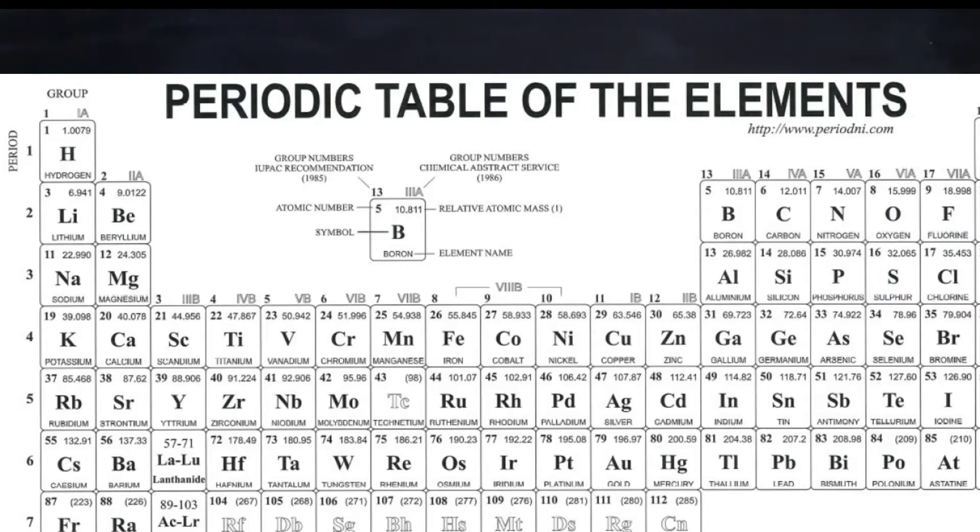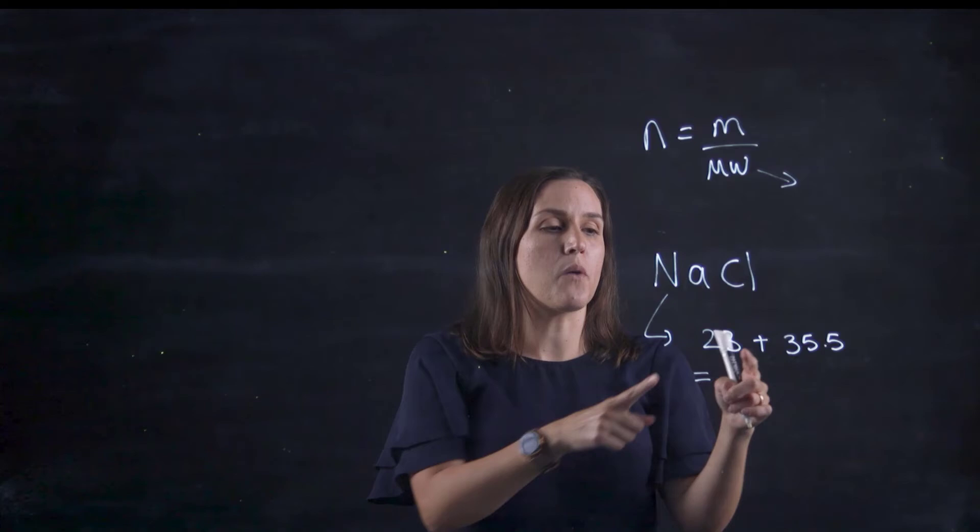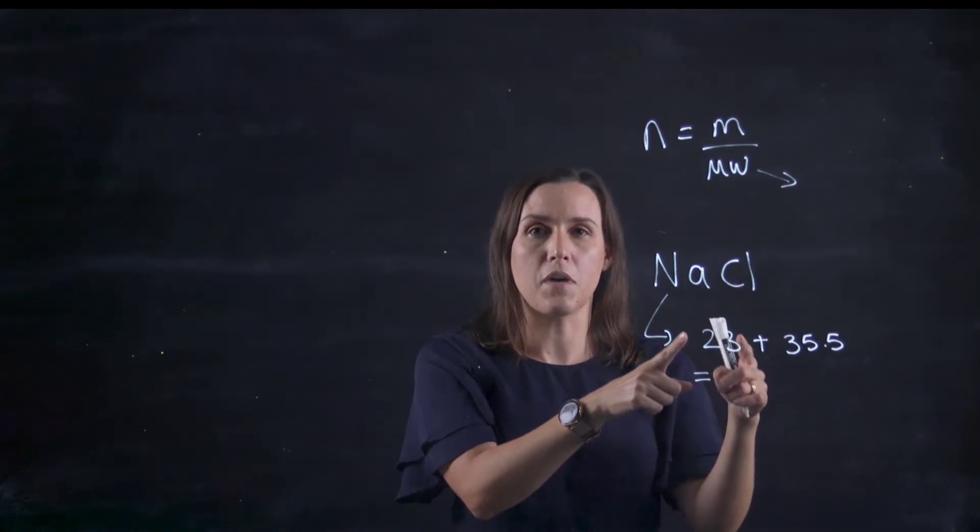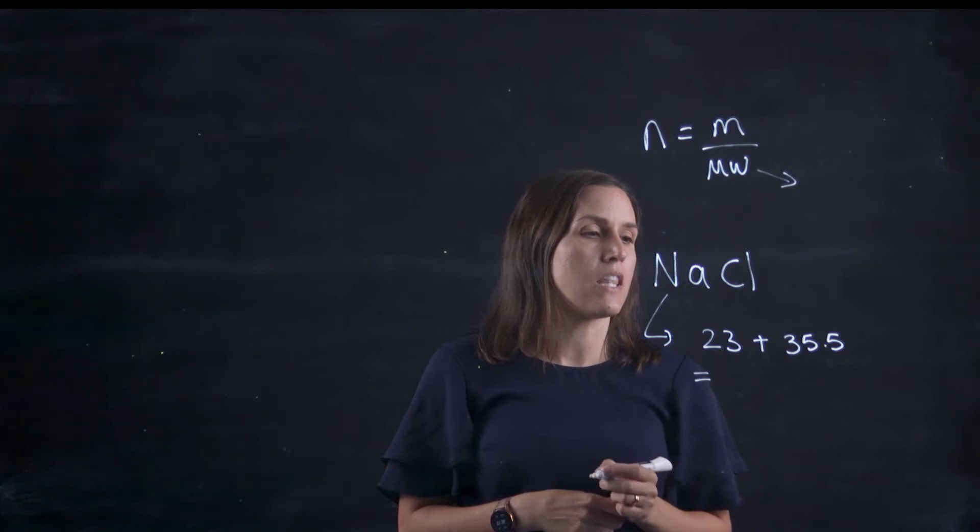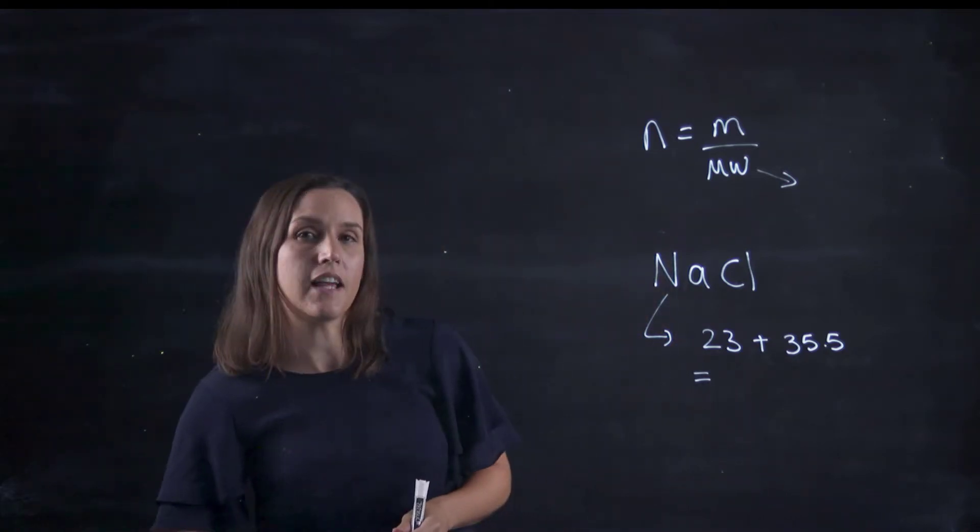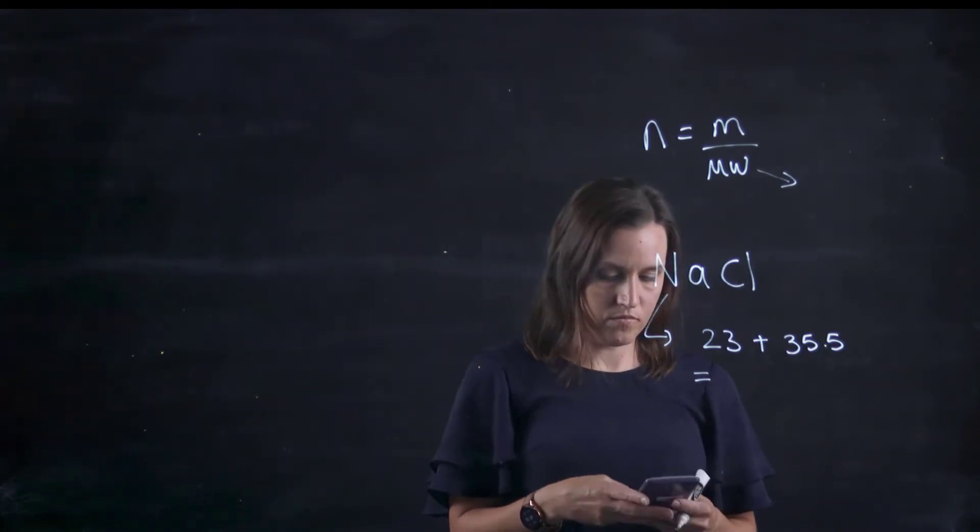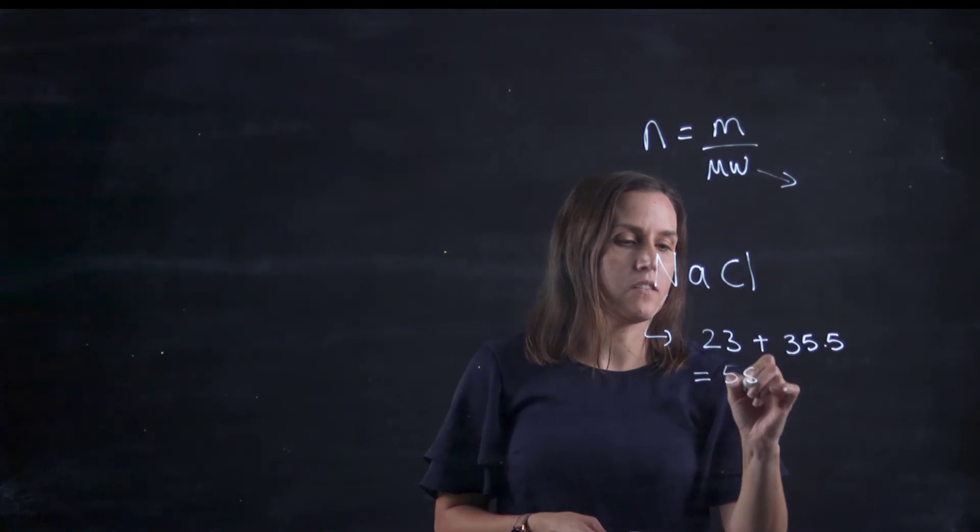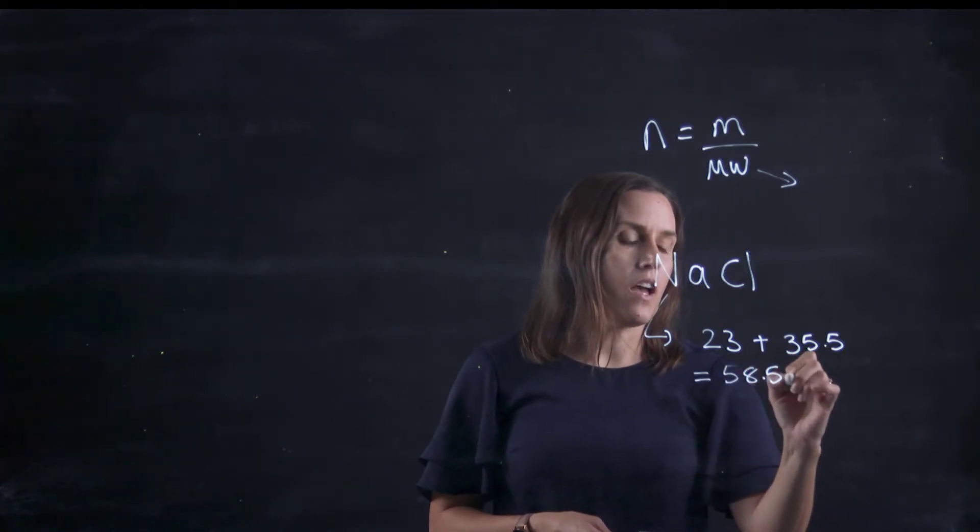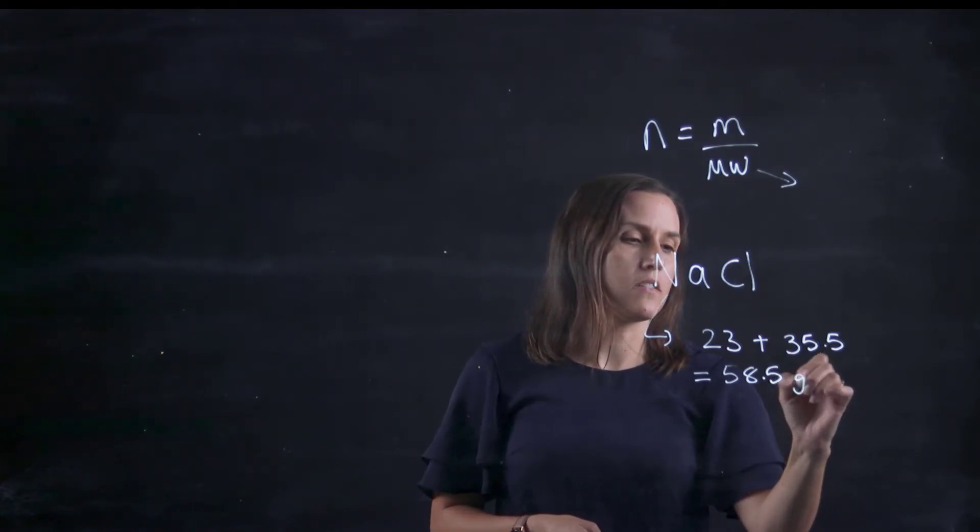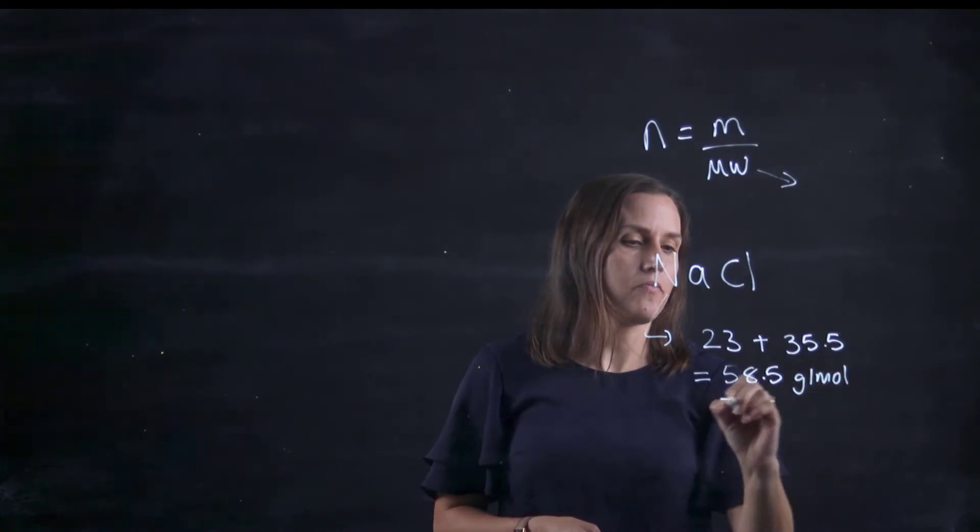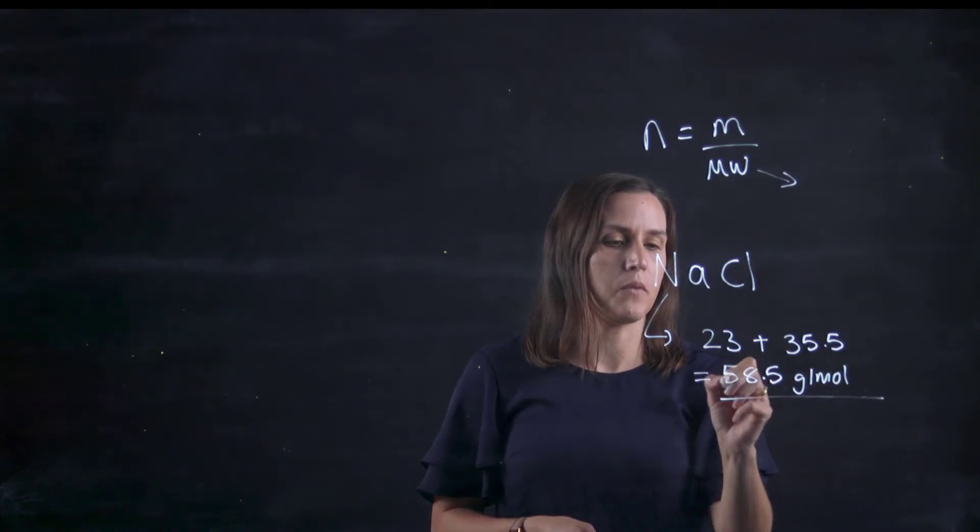To work out the molecular weight for this, I would add those two together because there's one of each. If I had two sodiums, I would multiply the weight of sodium by two, but I only have one in this one. So grabbing your calculator and putting it in, I get 58.5 atomic mass units or grams per mole for the molecular weight.